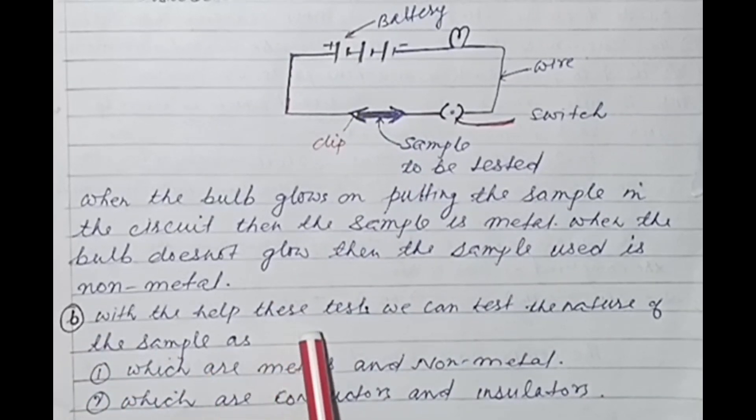B. With the help of these tests, we can test the nature of the sample as which are metals and non-metals, which are conductors and insulators.